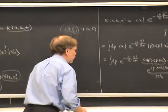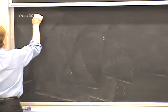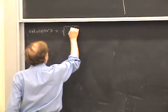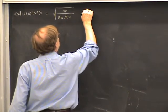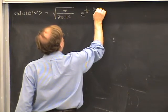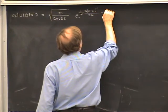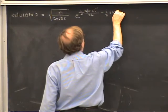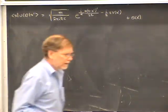What we get is the short-time propagator: ⟨X|U(epsilon)|X′⟩ equals the square root of M divided by (2πiℏε), times e to the i over ℏ times [M(X minus X′) squared over 2ε, minus ε times V(X′)], plus order epsilon squared. That's the short-time expression for the propagator — an approximation valid for small ε.